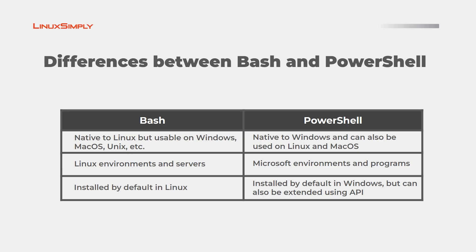In the next section, I will be talking about a few more differences. Bash is native to Linux operating system, but also usable on Windows, macOS, and Unix-based systems, whereas PowerShell is native to Windows and can also be used on Linux and macOS. Furthermore, Bash is applicable for Linux environments and servers, whereas PowerShell is widely used for Microsoft environments and programs. Both Bash and PowerShell are installed by default in their own systems, but PowerShell can also be extended using API.